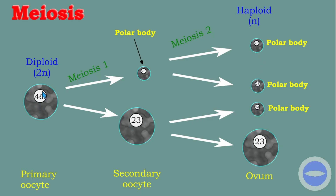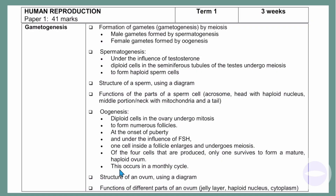So the process of oogenesis starts with one diploid cell that undergoes meiosis, and at the end we have only one haploid cell with three polar bodies that degenerate. According to the exam guideline, we must also know the structure of the ovum using the diagram, and the functions of the different parts of the ovum, including the jelly layer, haploid nucleus, and cytoplasm.